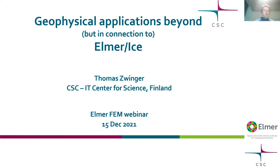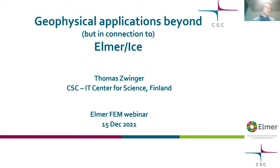What I want to talk about today is geophysical applications beyond, but motivated by their origins in connection to Elmer Ice. In particular, we'll talk about a recently developed model for glacial isostasis — the deformation of the earth in response to ice load and ocean load. In the second part, I'll introduce new developments on a groundwater permafrost model mainly applied to nuclear waste repository risk assessment.